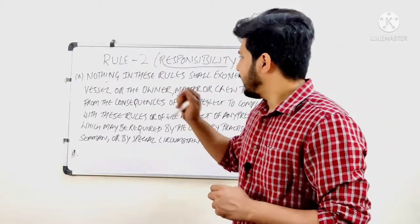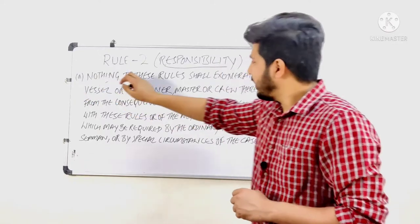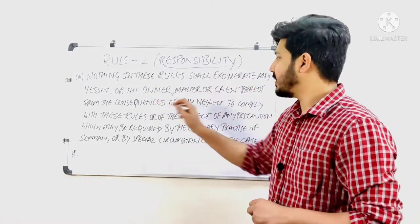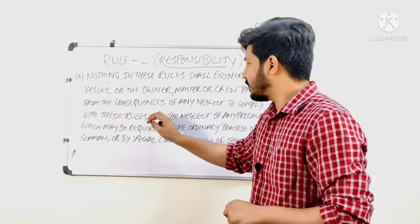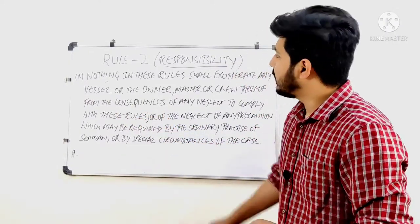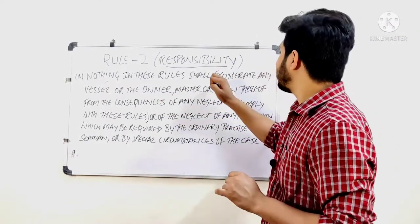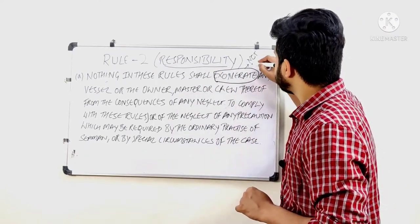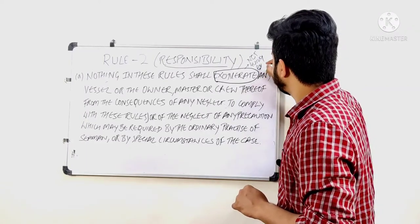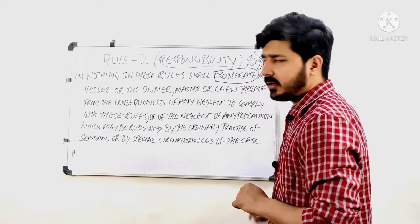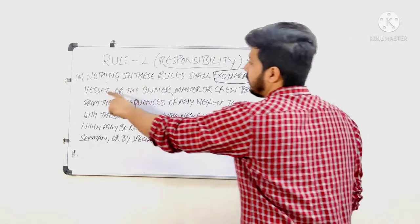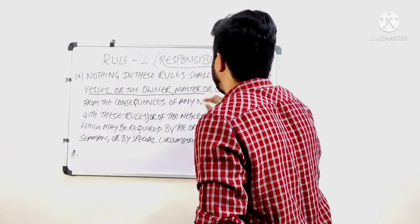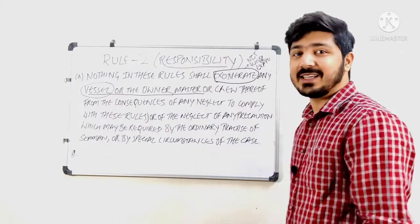Let's go line by line — it is very easy to understand. 'Nothing in these rules shall exonerate any vessel or the owner, master or crew thereof from the consequences of any neglect to comply with these rules.' So they are saying nothing in this rule shall exonerate — exonerate means 'not guilty' or escape — any vessel, owner, master, or crew.